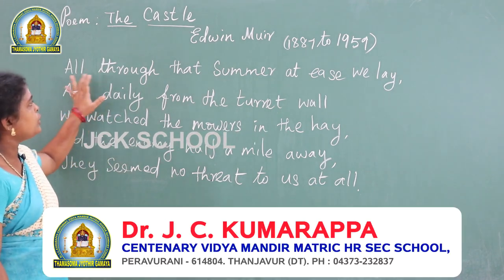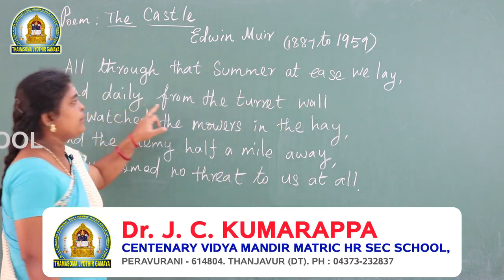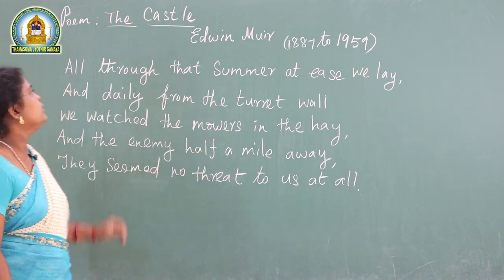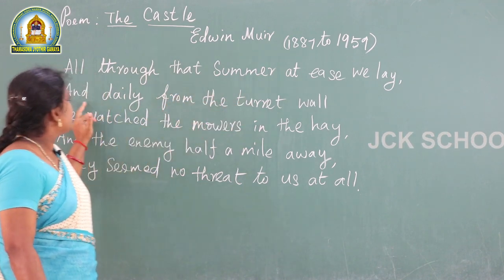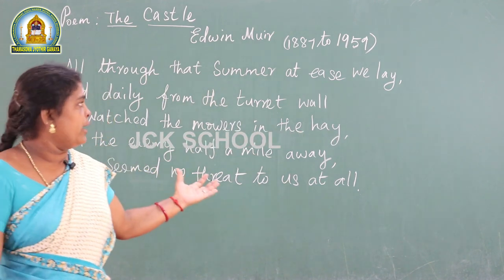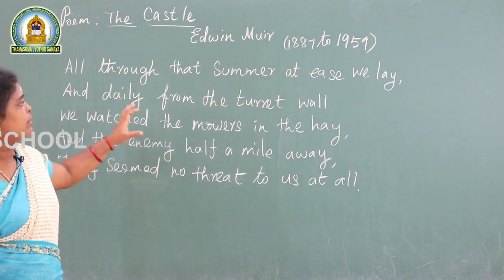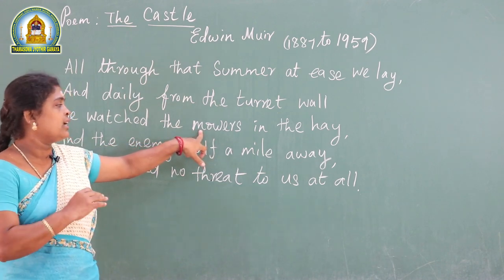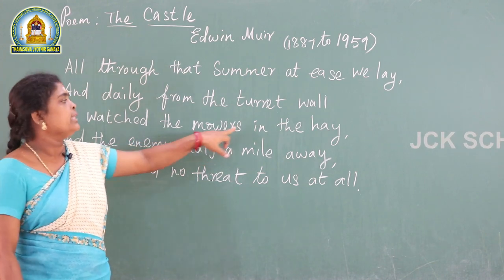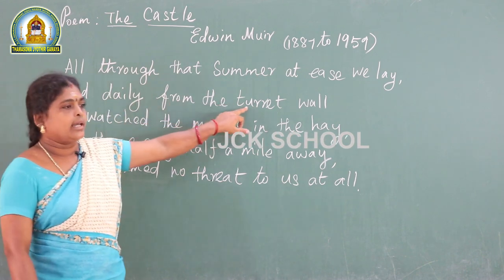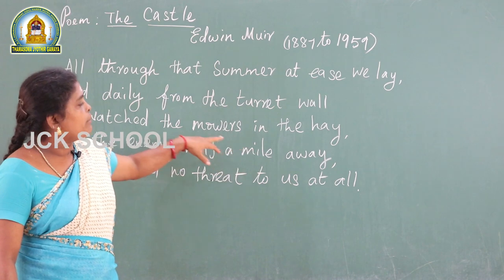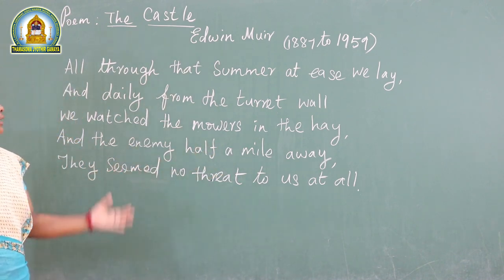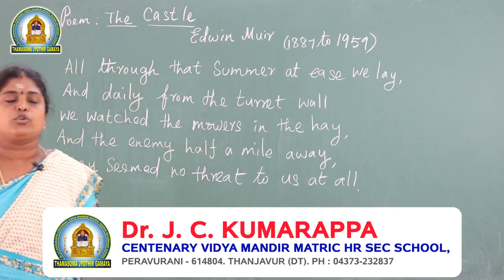All through that summer at ease we lay, and daily from the turret wall, we watched the mowers in the hay, and the enemy half a mile away, they seemed no threat to us at all. The soldiers are stress-free all the summer days. Their only work is watching the mowers — people who are maintaining the gardens and cutting the grass. Turret wall means a tower on top of the castle. The enemies are half a mile away from the castle, but the soldiers do not have any fear at all.